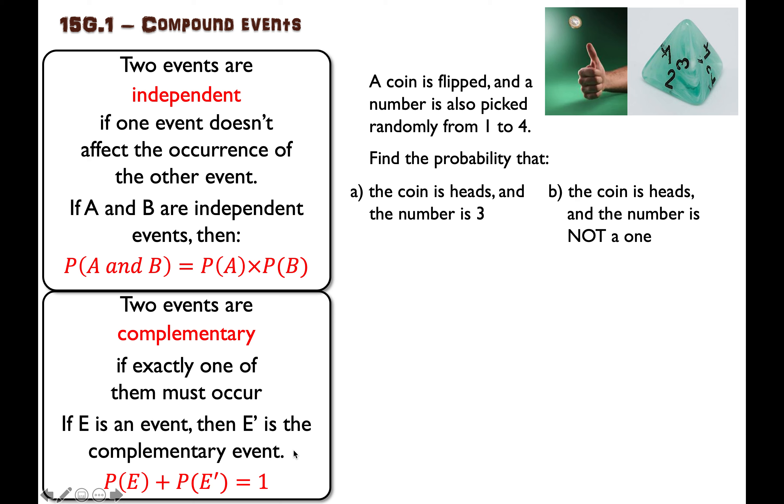As an example, you flip a coin, chance that it's heads is 50%, chance that it's tails is 50%. Add them together, chance is one.